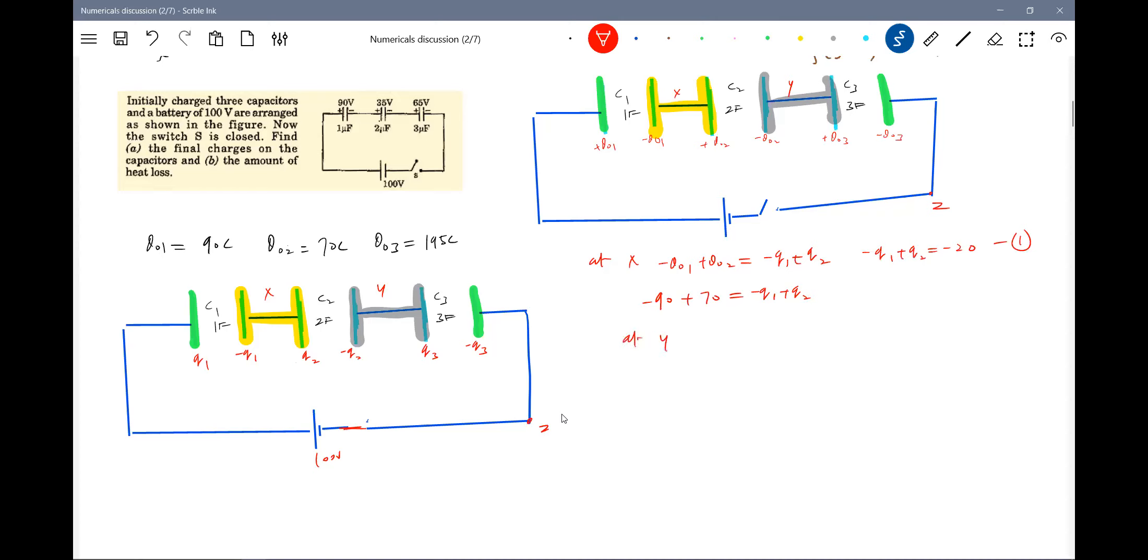Similarly, at Y, it should be equal to minus Q2. So looking at above equation minus Q naught plus Q naught 3 is equal to minus Q2 plus Q3.